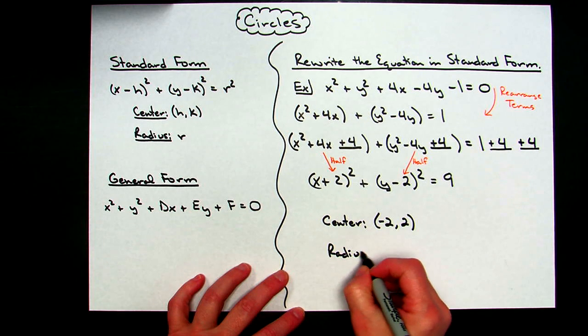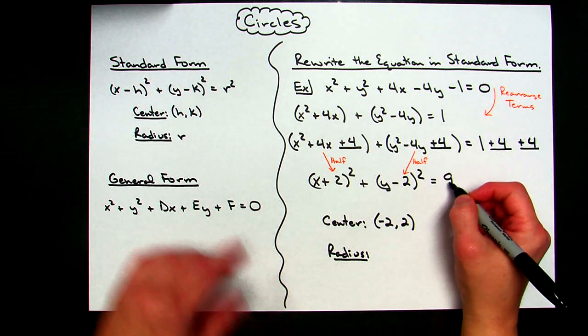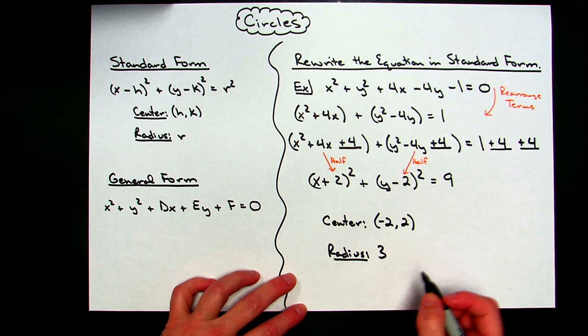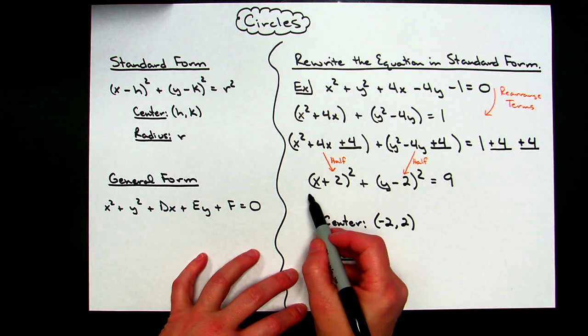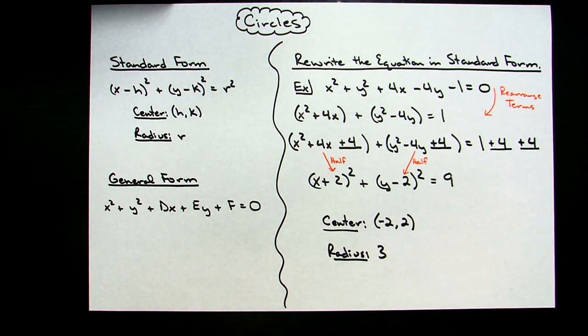And then you could also look at this number right here. And if that is the r squared, then square root of that gives me a radius of 3. So rewriting it in standard form and then being able to identify the center and the radius.